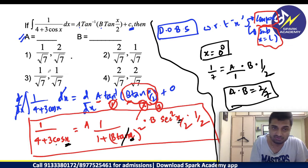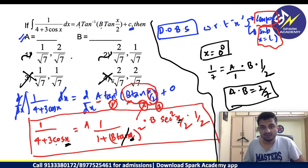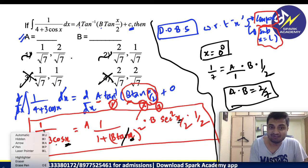Now, can we check the options and see which option is satisfying this? First option, 1 by root 7 into 2 by root 7, 2 by 7, maybe. Second option, 2 by root 7, 1 by root 7, maybe. Third, 1 by root 7 into 1 by root 7, 1 by 7, no. Fourth, 2 by root 7, 2 by root 7, 4 by 7, no. We eliminated 2 options using this approach.